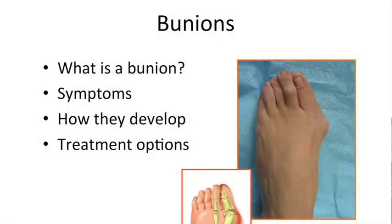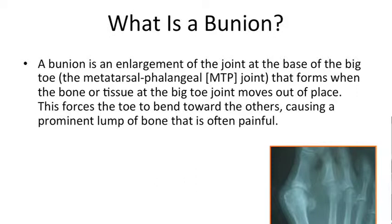The first topic is bunions. A bunion is basically a two-part deformity. It starts with the big toe drifting over towards the second toe, and as that progresses, we get a widening of the angle between the first and second metatarsal bones — those long bones behind your big toe, analogous to the metacarpal bones in your hands. As that angle increases, the foot becomes wider.